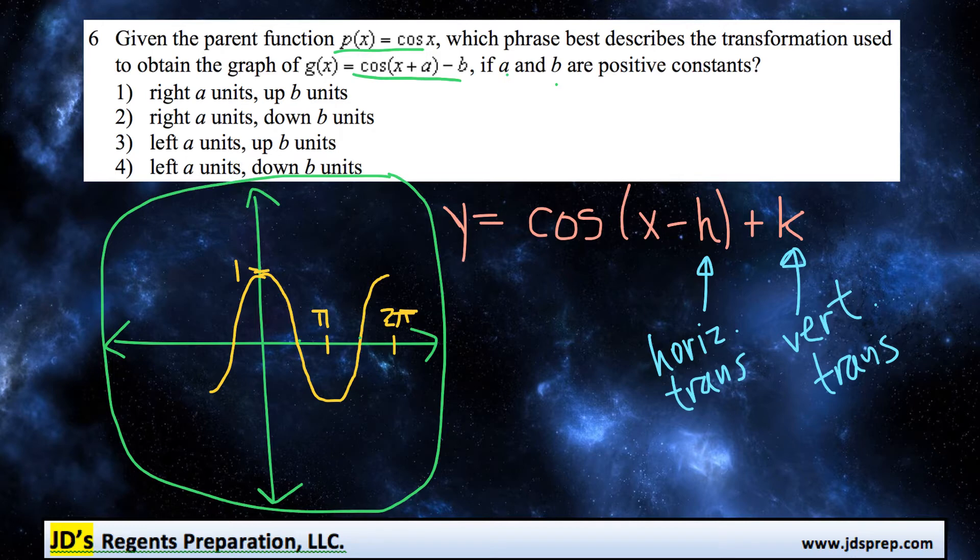Now essentially to solve this problem, we need to understand this general format of a cosine function. If you're taking cos(x minus h), in this formula, h would represent a translation horizontally. So if h is positive, for example it would be x minus 2, then it would be horizontally translated two units to the right.